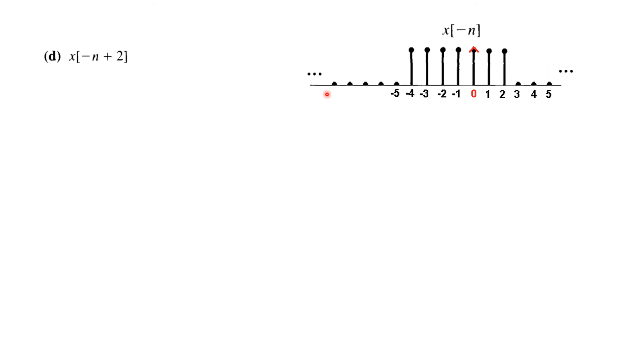We will be now moving this signal right or left depending on the value. So we put minus n plus 2 equal to 0. n is equal to 2. That means we have to move it in a manner that the hat comes at point 2. So we have moved it. So hat is at point 2. And now you can see that for less than minus 2, it is 0. And for greater than 4, it is 0. So less than minus 2 and greater than 4, it is 0.